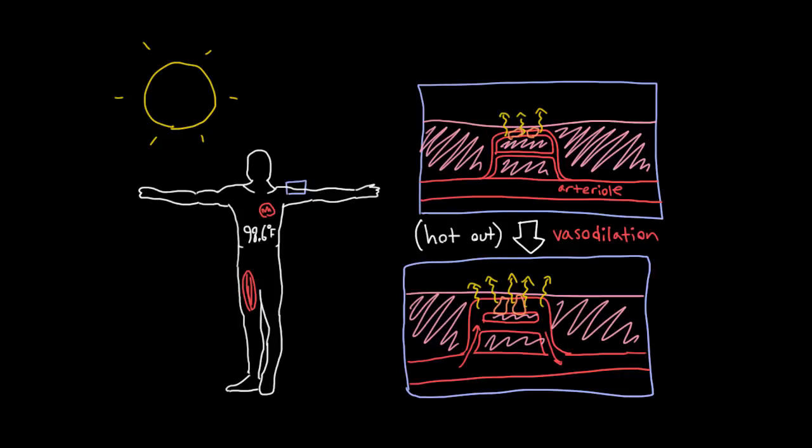And the way that your body tells these smooth muscle cells to squeeze or not to squeeze is just through nerves. So I'm going to draw a nerve in purple. And it might be kind of hard to see, but I think you get the point. Your body literally sends impulses through these nerves that tell these smooth muscle cells whether they should be contracting or whether they should be relaxing.